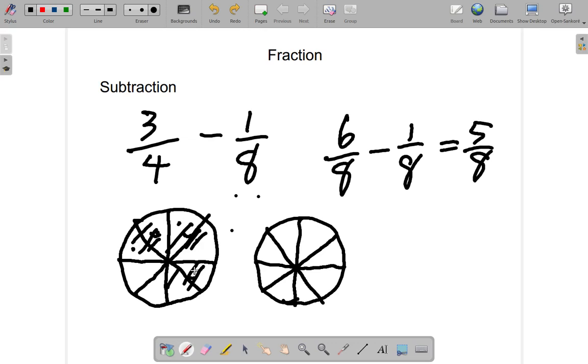And the 3 quarters gives me how many eighths. 1, 2, 3, 4, 5, 6 eighths. I know. 6 minus. And I'm interested in 1 of the eighths here. 6 minus 1 is 5.